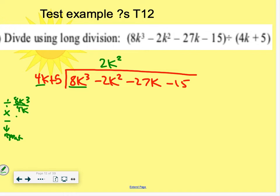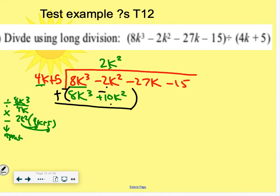Then I multiply that 2k squared by the divisor, 4k plus 5, remembering to distribute. So 2k squared times 4k is 8k cubed. 2k squared times 5 is 10k squared. When you do this, the first term should be the same, because the idea then, when we go to subtract, is that first term is going to cancel. And then we're taking negative 2 minus a 10. Or if you'd prefer, you could distribute the negative. Negative 2 plus a negative 10 is negative 12k squared.